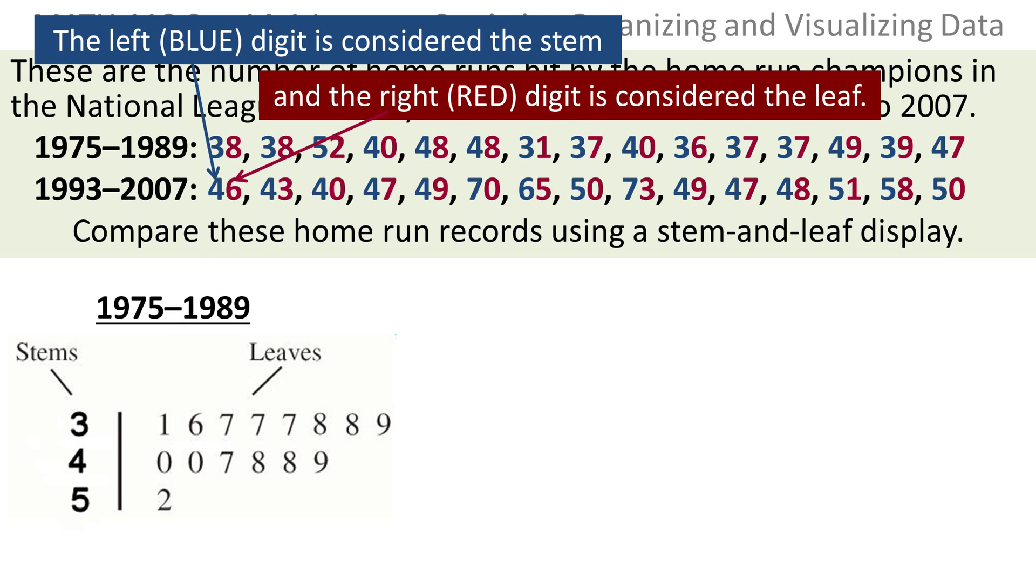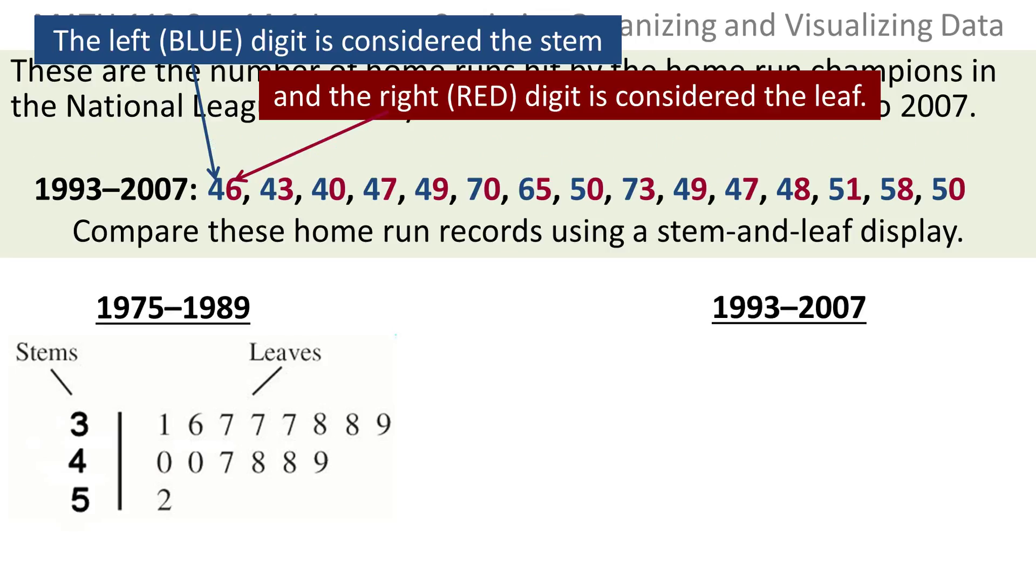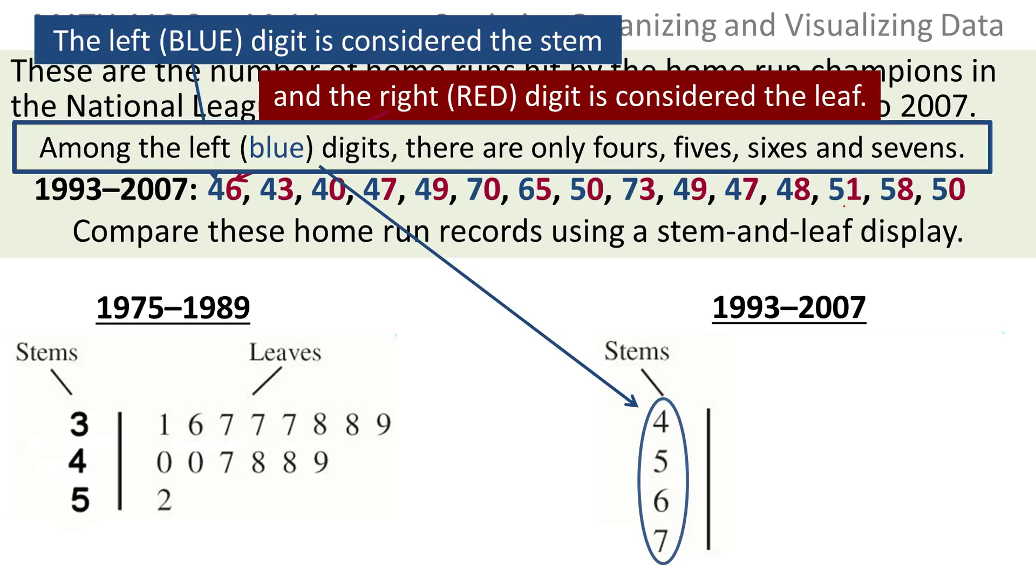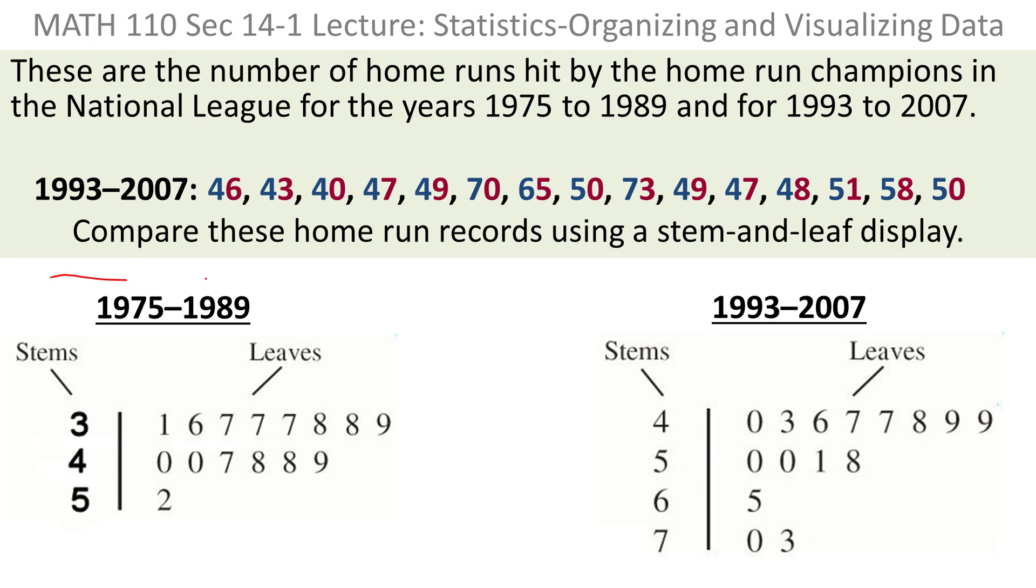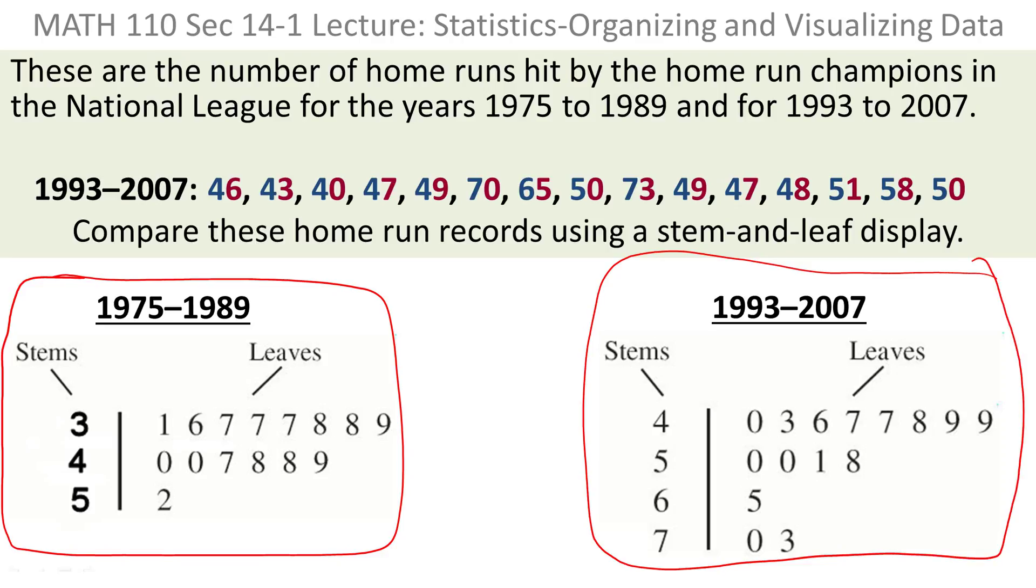Now let's do the same thing for the 1993 through 2007 data. I notice here the stems are either four, five, six, or seven. I put the leaves together exactly the same as before. I go through and find all the ones that begin with a four. There's a forty, a forty-three, a forty-six, two forty-sevens, a forty-eight, and two forty-nines. Then I move down and do the fives. There's a fifty, another fifty, a fifty-one, a fifty-eight. Then there's a sixty-five. Then there's a seventy and a seventy-three. You're putting them in numerical order. Now we have the stem and leaf plot for both data sets.